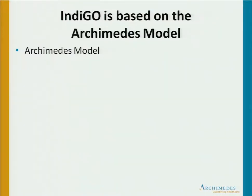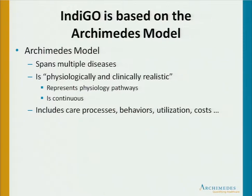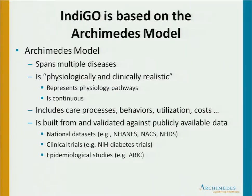Indigo is based on the Archimedes model. It spans multiple diseases — not separate models of diabetes and colon cancer, but all together in the same model, because that's important for representing comorbidities realistically. It is physiologically and clinically realistic to the extent permitted by the data, treating biological variables as continuous, with continuous time. We also include care processes, behaviors, utilization costs, and all the other things that administrative decision makers as well as physicians find to be important.